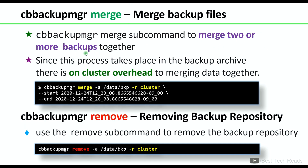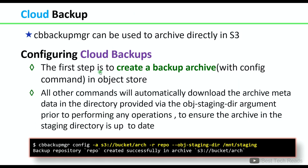cb backup mgr merge is used to merge two or more backups together. You can mention start and end tags to merge the list of backups. cb backup mgr remove is used to remove a backup repository.